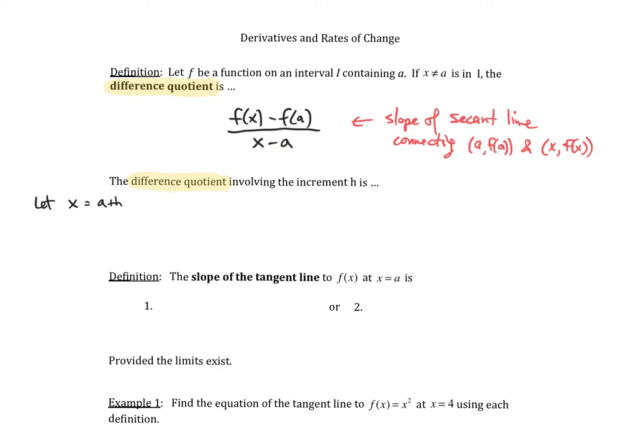I'm going to substitute a plus h into x right here and into x right there. We're going to have f of a plus h minus f of a divided by a plus h minus a. Take a look at that denominator. The a's cancel each other out, and we end up with the difference quotient f of a plus h minus f of a all divided by h.